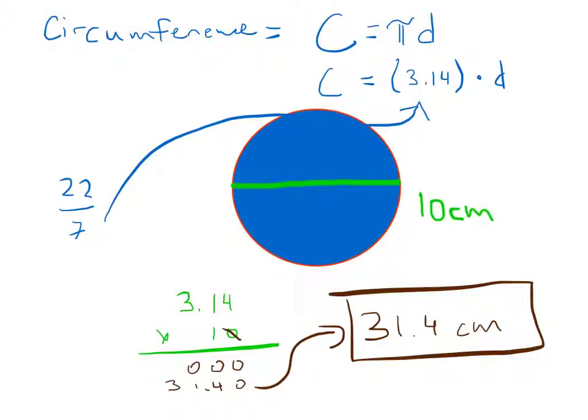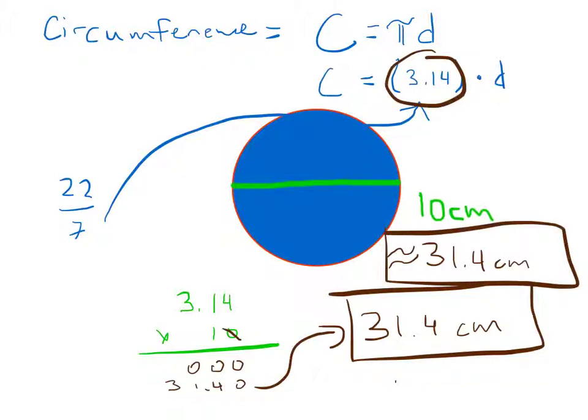Now you'll notice we should also use the wavy equals symbol here because 3.14 is not an exact number, it's a rounded number. Pi is a number that goes on into infinity, it never ends, so we round it to two digits. So that's why we add the approximately symbol in front of our answers when dealing with pi, because we aren't using an exact number.